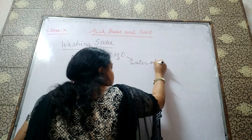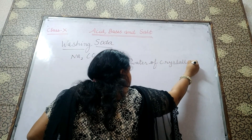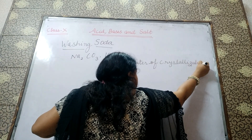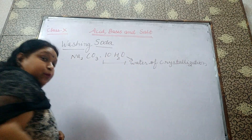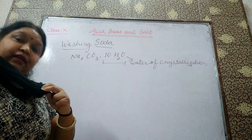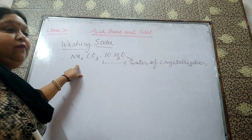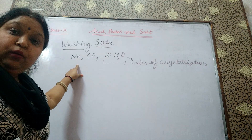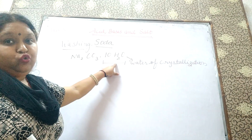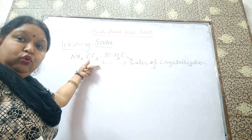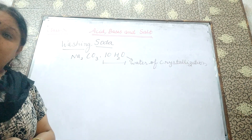Water of crystallization is responsible for the colors of any substance, which we are going to discuss. You have to learn that what is the formula: sodium carbonate dot 10H2O. Na2CO3·10H2O is called washing soda.